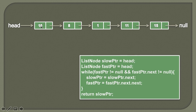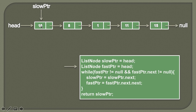Now let's see for an odd number of nodes. This linked list has five nodes: 10, 8, 1, 11, and 15, and the head points to the first node which is 10. The algorithm is the same. First, we create a slow pointer and assign the value of head to it, so the slow pointer points to the first node. Then we create a fast pointer and assign the value of head to it as well.